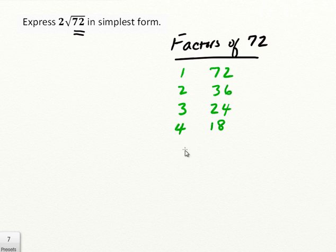5? No. 6? Yes, 6 times 12. 7? No. And 8? Yes, 8 times 9 is 72. So lots of factors for 72.